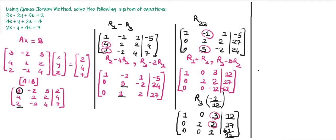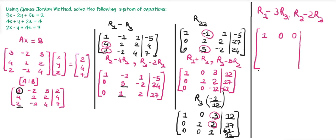Now we want to make the 3 (in row 1) and the 2 (in row 2) in column 3 equal to 0. We perform R1 → R1 − 3R3 so that 3 − 3 = 0, and R2 → R2 − 2R3 so that 2 − 2 = 0. You can perform the calculations using a calculator. The first row becomes 1, 0, 0, −13/4. The second row becomes 0, 1, 0, 41/6. The third row is 0, 0, 1, 61/12.